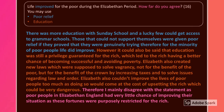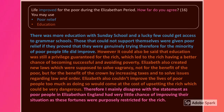'In conclusion, there was more education with Sunday school, and a few lucky people could get access to grammar schools. Those that could not support themselves were given poor relief if they proved that they were genuinely trying. Therefore, the minority of poor people did find some benefits under Elizabeth. However, education was still a privilege guaranteed only for the rich, which led to the rich having a better chance of becoming successful and thus avoiding poverty in the future. Elizabeth created many laws which were supposed to solve lots of problems for the poor. However, this was not for their benefit but for the benefit of the crown, by increasing taxes and solving issues around vagrancy such as thieving and begging. Elizabeth also couldn't improve the lives of poor people too much, as doing so would come at the cost of upsetting the rich, which could be very dangerous. Therefore, I mainly disagree with the statement, as poor people had very little chance of improving their own situation.'